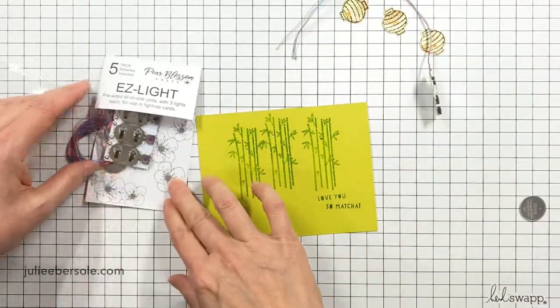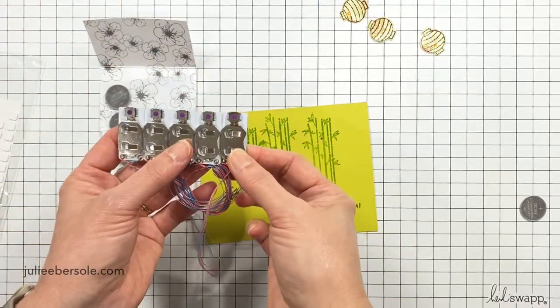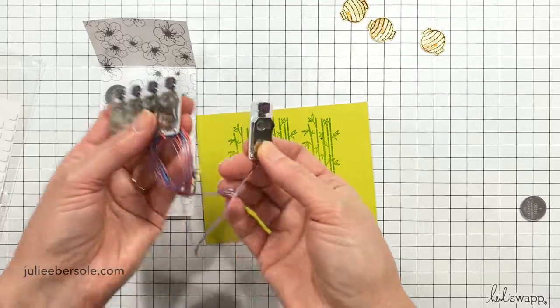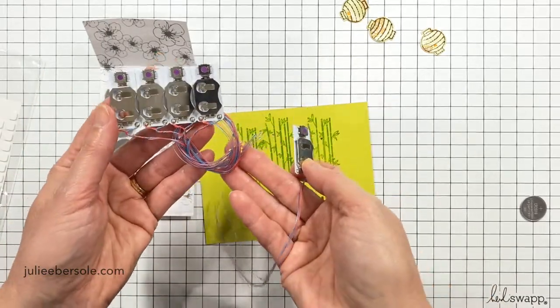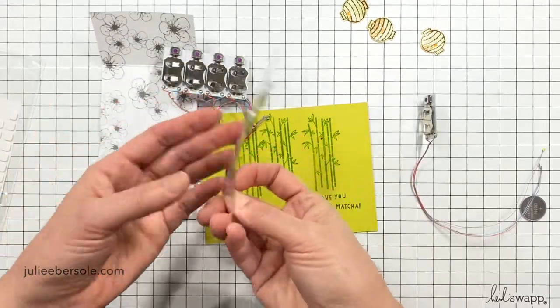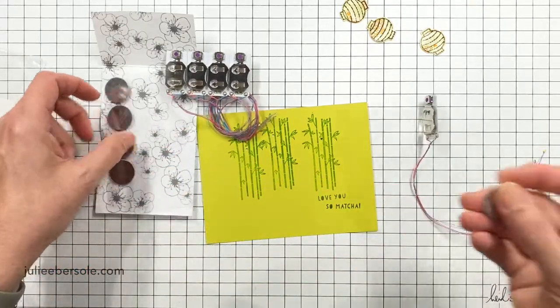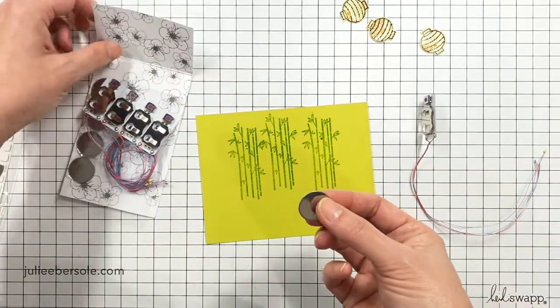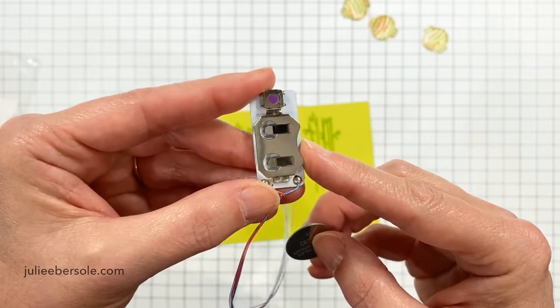Now I've got my pack of lights here. These come in different assortments, so you can get them in a two-pack or a three-pack, a five-pack. That's what I've got right here. And you just snap them apart. This is the battery housing, and it has the LEDs already pre-wired and attached to it. And then in the kit, you also get a battery for each one of these sets. So I've got five batteries and five light sets.